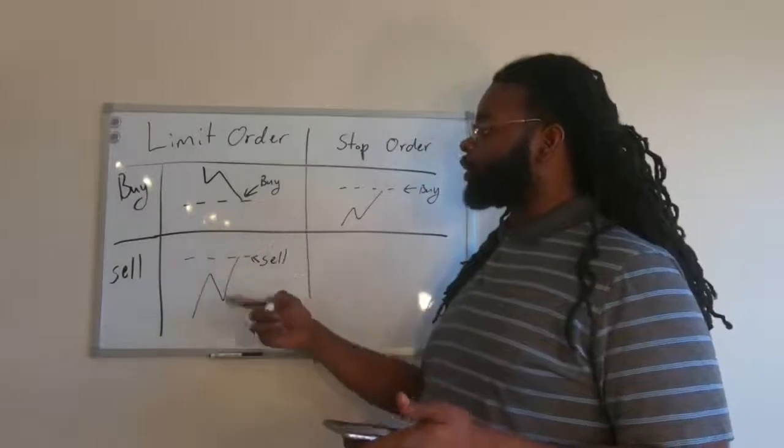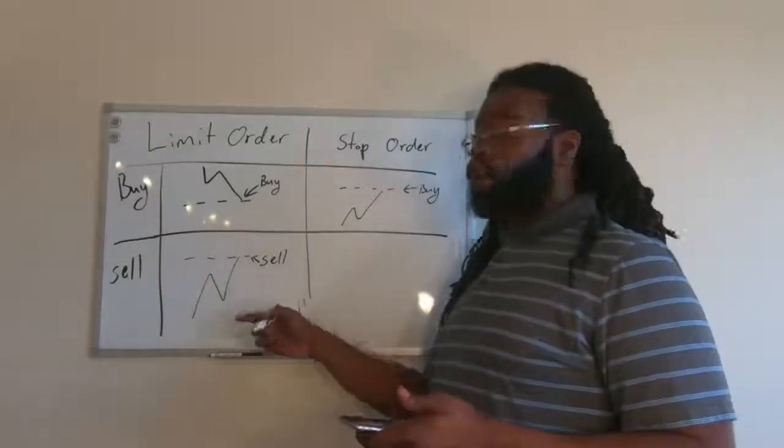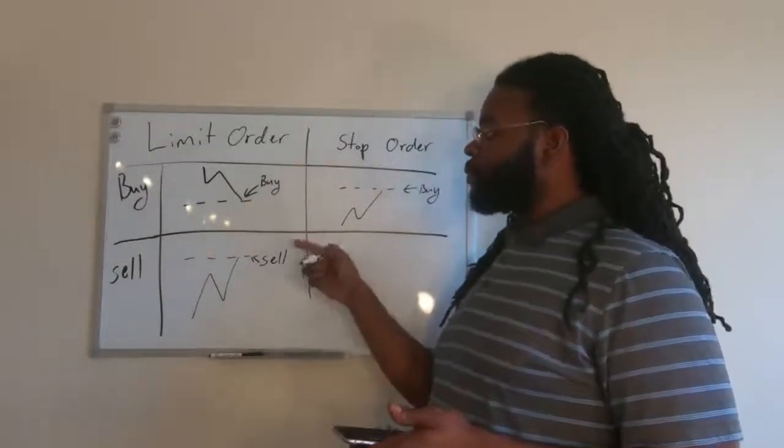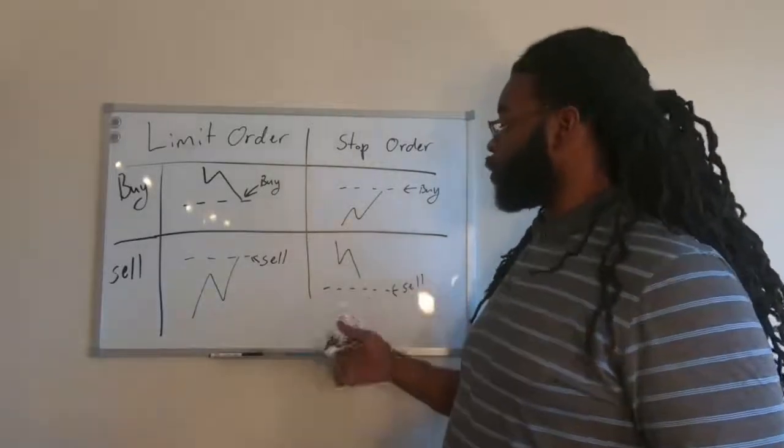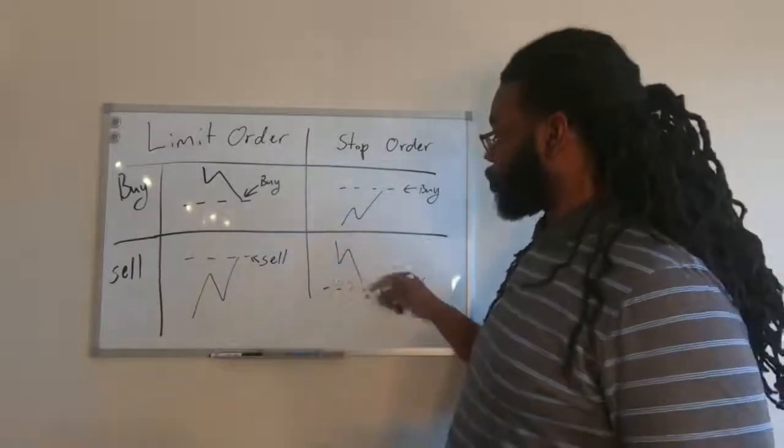When you're doing a Limit Order Sale, you're choosing the price where once a stock rises to that price, you're automatically going to sell. Whereas for a Stop Order Sale, you're going to wait until a stock drops to a certain price, and then you're going to automatically sell that stock.